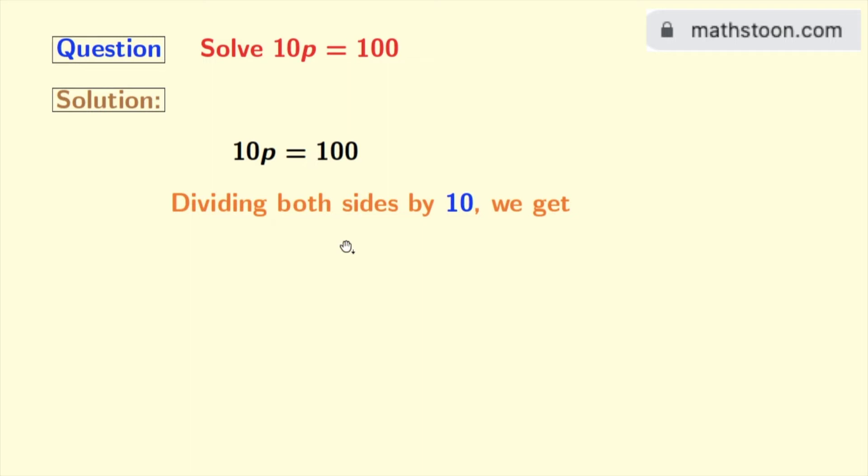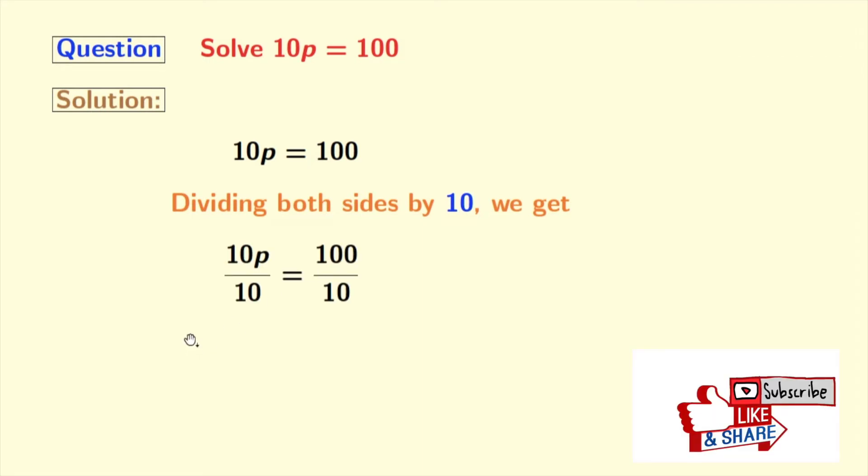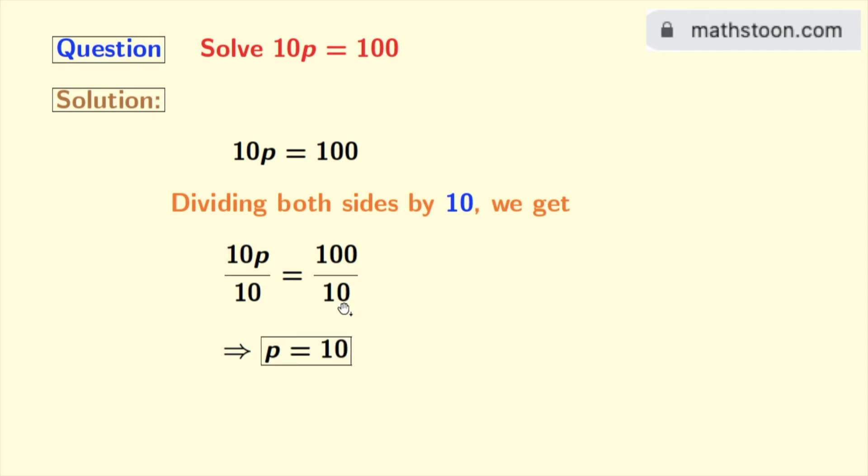Doing that, we get 10p divided by 10 equals 100 divided by 10. Look, on the left-hand side, 10 gets cancelled. So we are left with p, and on the right-hand side, 100 divided by 10 is 10. So we get 10.